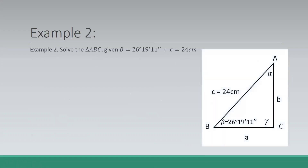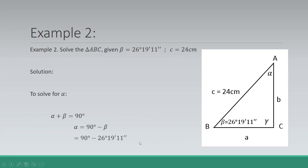Next example: solve triangle ABC given the value of angle beta which is 26 degrees 19 minutes and 11 seconds, and the value of C which is 24 centimeters. Since the two angles are complementary, we subtract the given angle from 90 degrees — that is 90 degrees minus 26 degrees 19 minutes and 11 seconds — giving us alpha equal to 63 degrees 40 minutes and 49 seconds.